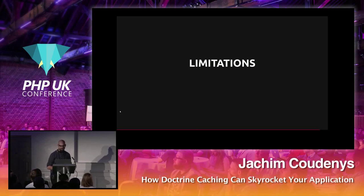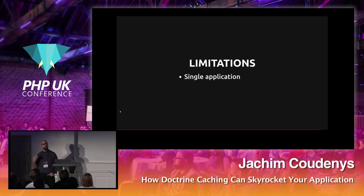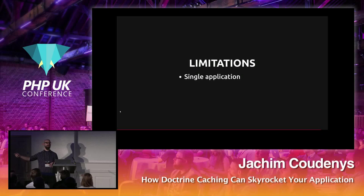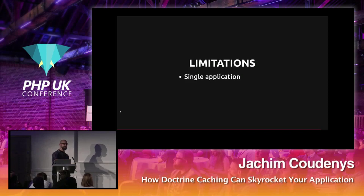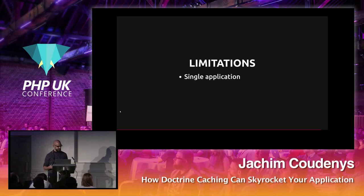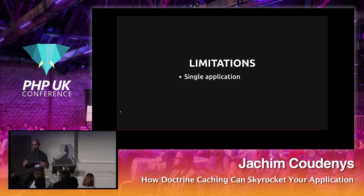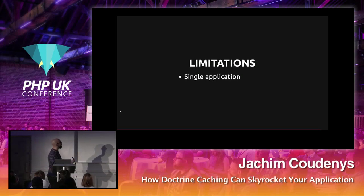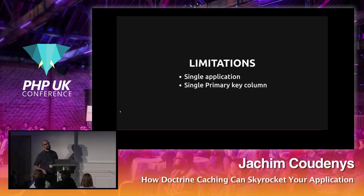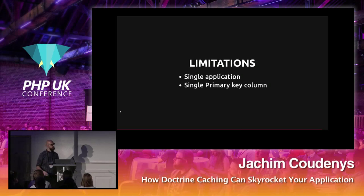There are some limitations. If you have a back-office system where the database is updated from another application, you won't see those updates through your second-level cache. You can work around it by invalidating caches from the other side, but it gets complicated. Also, you must use single primary keys — though that's not really an issue and is generally easier anyway.